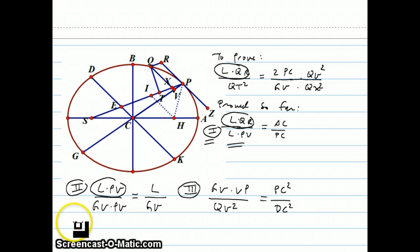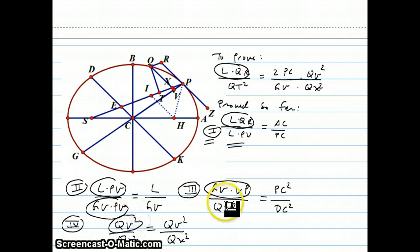The fourth equation, remember there are only five, just something to notice is that this GV times PV happens to be the top of this. It's going to become important. The fourth equation is the easiest one of all. It's just the identity that QV² over QX² equals QV² over QX². It doesn't seem like a very important thing worthy of these five equations. But notice that this QV² is the top of this portion and it's the bottom of this one.